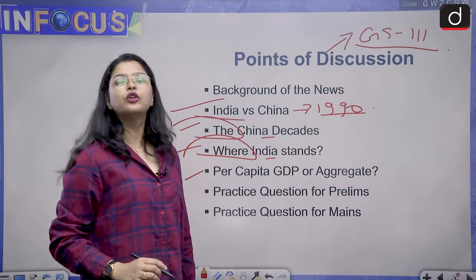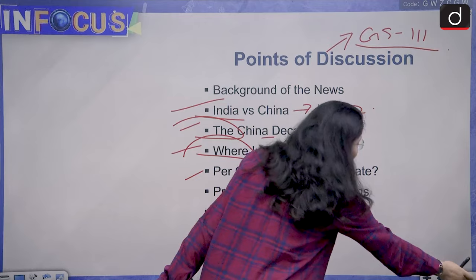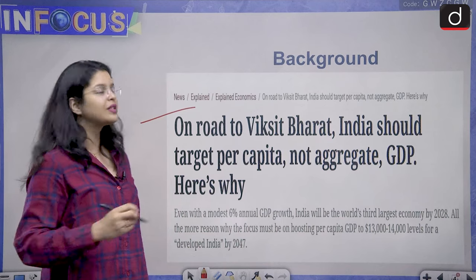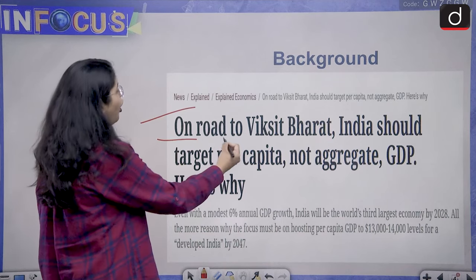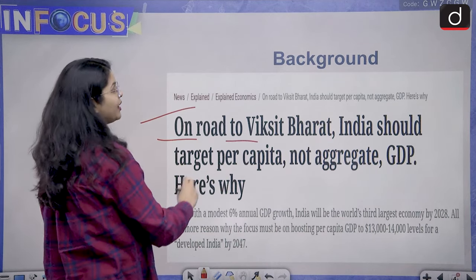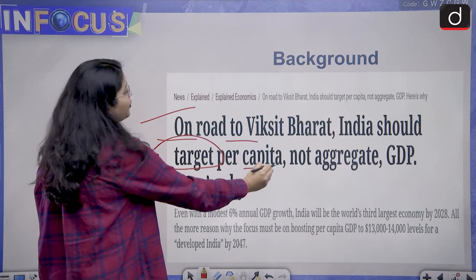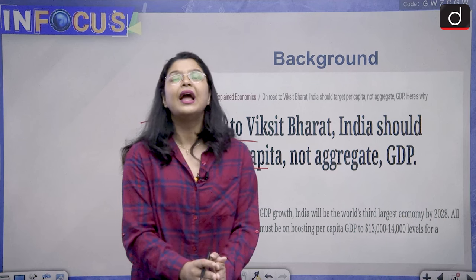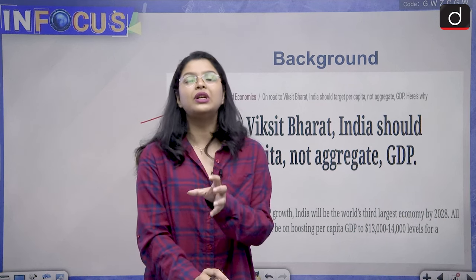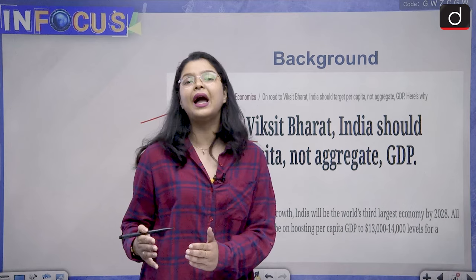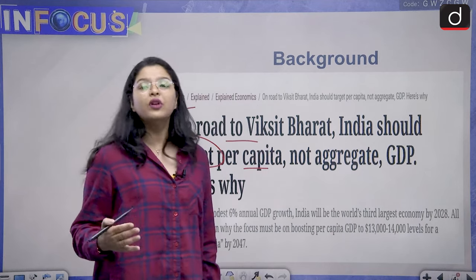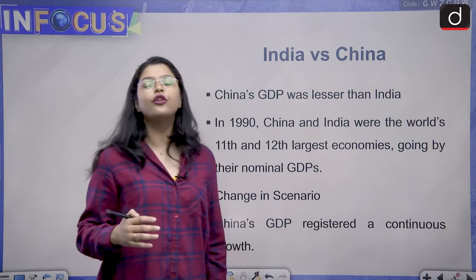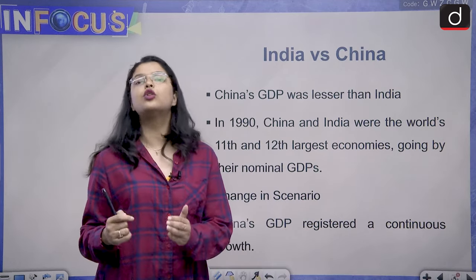If I talk about the background of today's topic, this article has been published in the Indian Express newspaper. It states that on the road to Viksit Bharat, India should target per capita GDP and not the aggregate GDP. We are going to study the reason behind this in our further discussion.